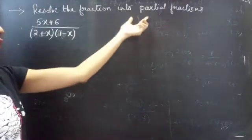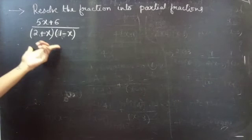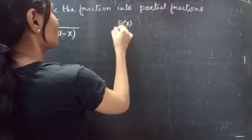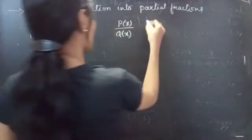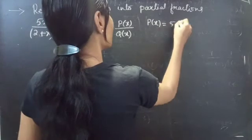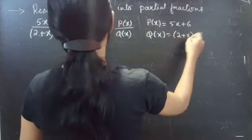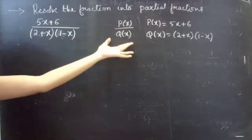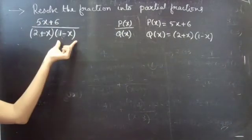Resolve the fraction into partial fractions. We are given a fraction, and firstly we will check whether it is a proper fraction or improper fraction. Let it be P(x) by Q(x), where P(x) equals 5x plus 6, and Q(x) equals (2 plus x) into (1 minus x).